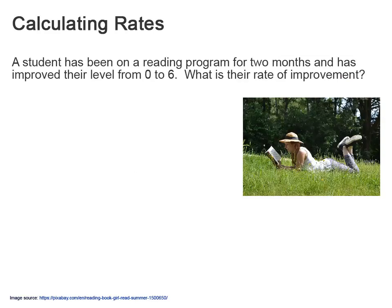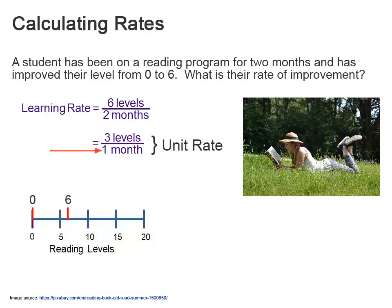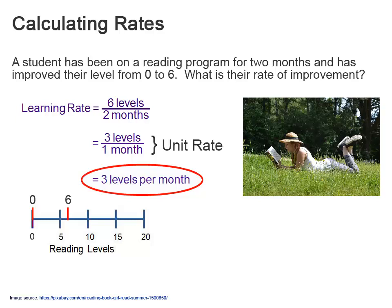So how do we calculate a rate? Let's say we want to find out how well a student is moving through a program of reading levels. This student started at level zero, and after two months has moved to level six. We can say that the learning rate is six levels for two months. While this is a valid form to present such a rate, it is a little cumbersome. By dividing the values six by two, we achieve a simpler form. This is called a unit rate, which determines the value in comparison to a single unit. In this case, the unit rate is three levels per month for our student.